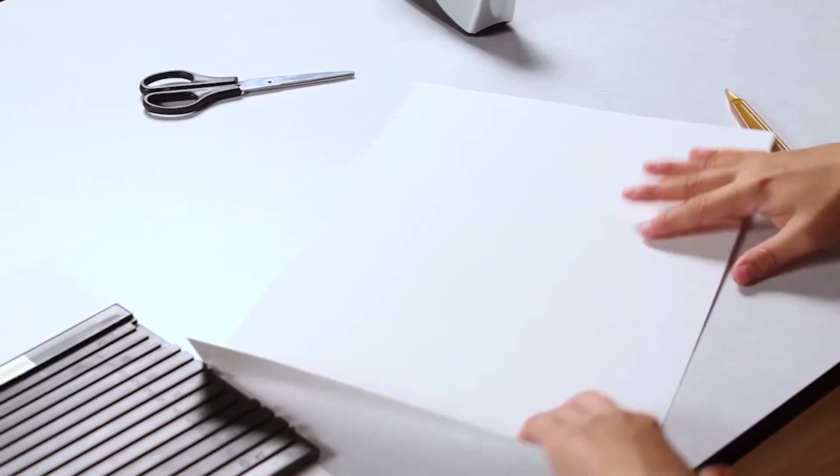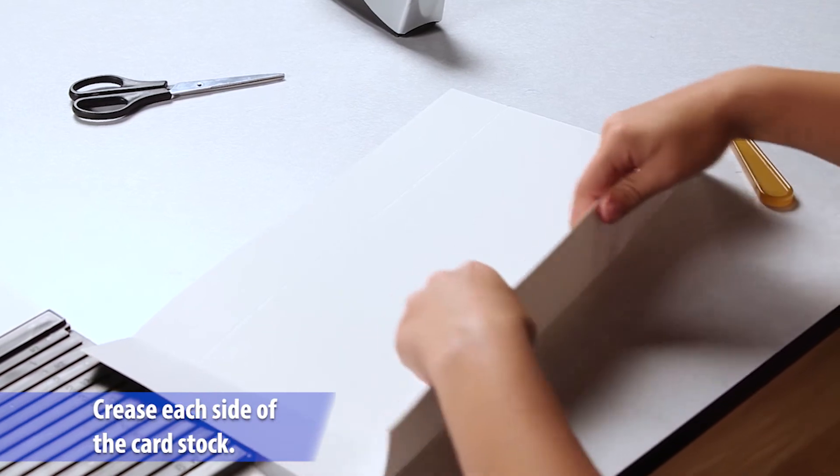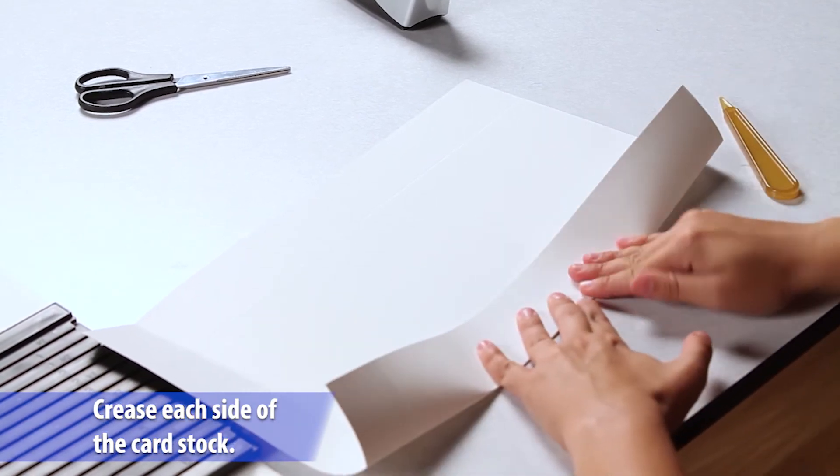To complete the bottom of the box, crease each side of the cardstock. This will create four sides.